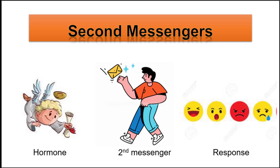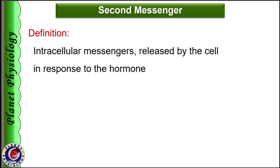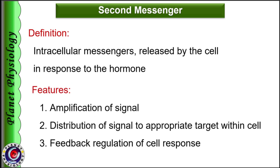The hormone is referred to as the first messenger and the intracellular trigger is called the second messenger. Second messengers are intracellular signaling molecules released by the cell in response to extracellular signaling molecules, i.e., the first messenger or hormone. They trigger the target cell response to the hormone. An important feature of this system is that second messengers are usually coupled downstream to multiple cyclic kinase cascades, which greatly amplify the strength of the original hormonal signals. They distribute the signal to the appropriate target within the cell and help in feedback regulation of the cellular response as well.